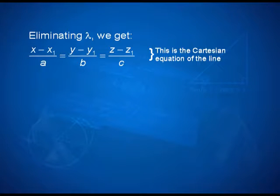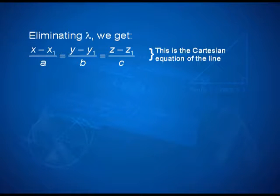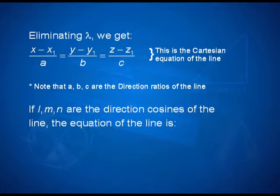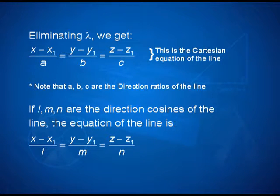This is the Cartesian equation of the line. Note that a, b, c — the denominators — are the direction ratios of the line; they are the direction ratios of the vector to which the line is parallel. If l, m, n are the direction cosines of the line, then the Cartesian equation takes the form (x − x₁)/l = (y − y₁)/m = (z − z₁)/n.